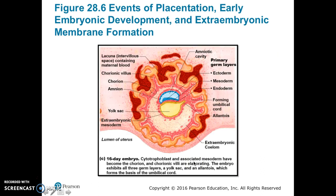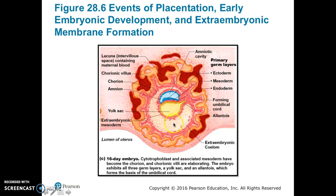Looking at a 16-day-old embryo, the cytotrophoblast and associated mesoderm have become the chorion, and the chorionic villi are elaborating. The embryo exhibits all three germ layers, a yolk sac, and an allantois, which forms the basis of the umbilical cord. The ectoderm is the blue layer, the mesoderm is the pink layer in between, and the yellow layer is the endoderm. The allantois is here, and the forming umbilical cord is just beyond that. The extra-embryonic coelom and extra-embryonic mesoderm are also visible here.